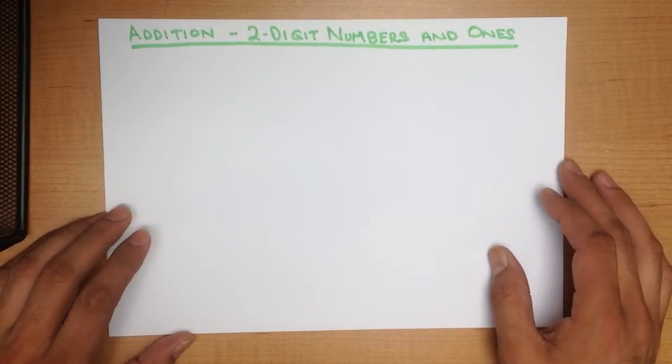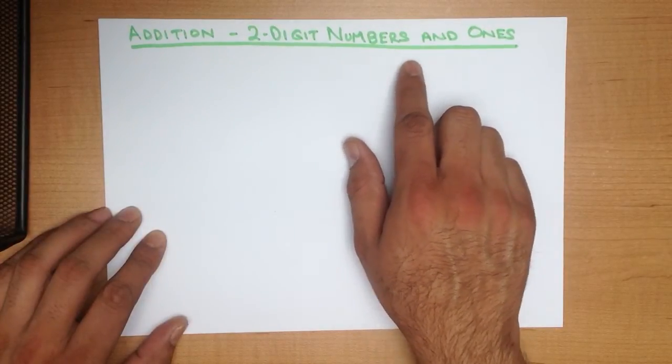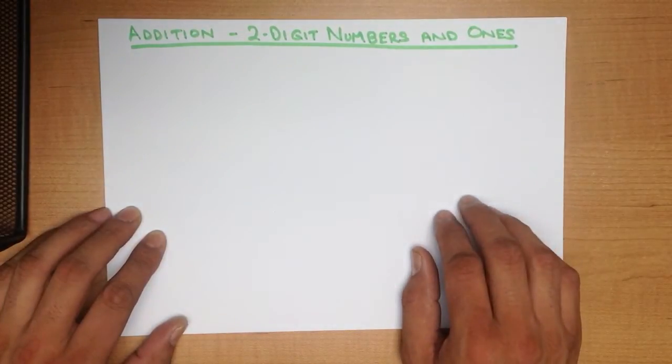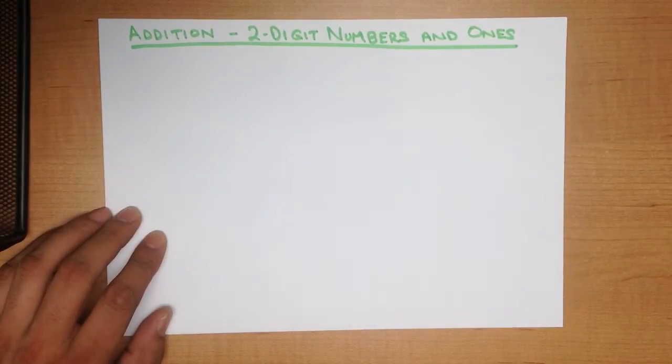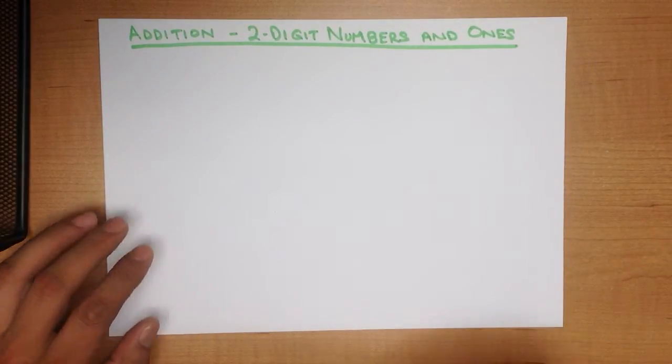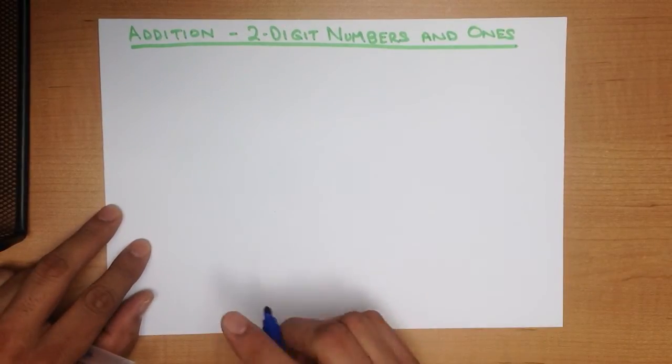In this tutorial we are going to go through addition of two-digit numbers and ones. We are going to do this using the dot method. Right, let's work through a few examples.